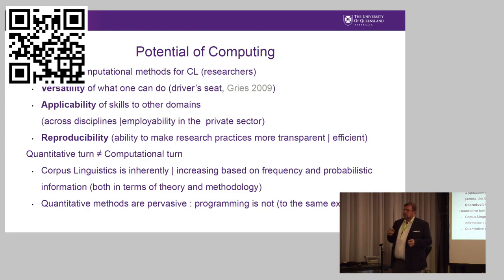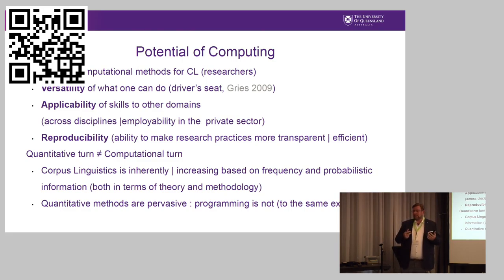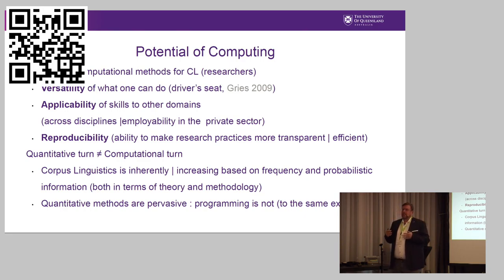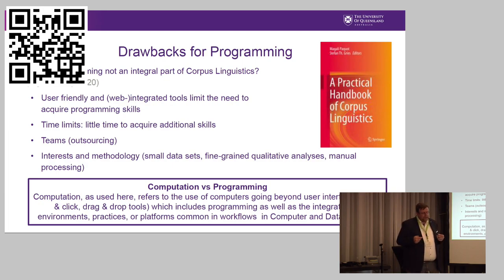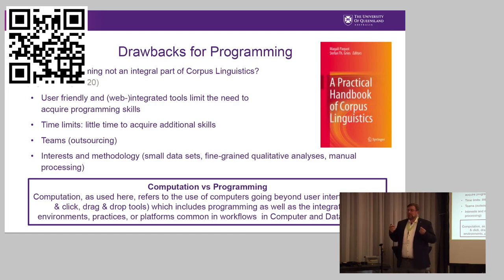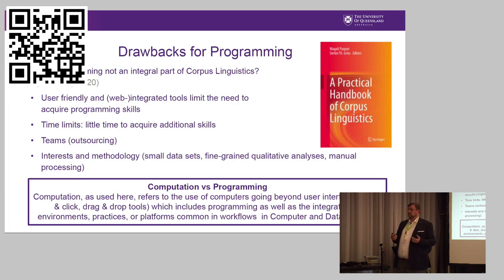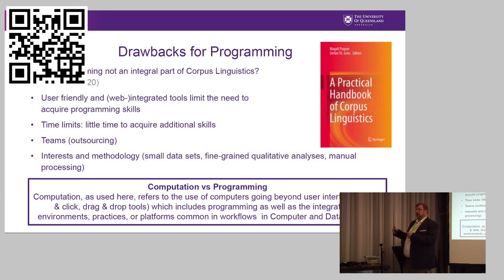The quantitative turn is different from the computational turn. The quantitative turn definitely has taken place and has affected linguistics — that's uncontroversial. The computational turn, not so much. Even if you look at textbooks you see that. Why is programming not an integral part of corpus linguistics when it offers advantages like employability, transparency, and basically being in the driver's seat? Well, there are very good reasons. We have user-friendly tools that allow us to do amazing research. They're sophisticated, flexible, and we can go a very long way by using ready-made tools.